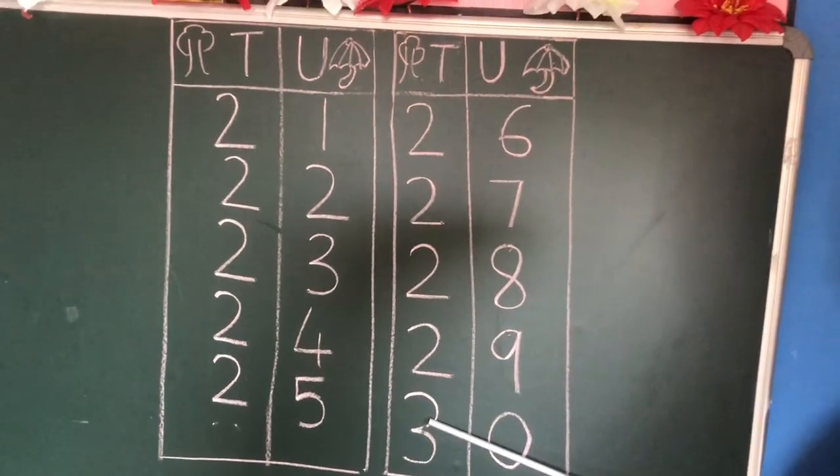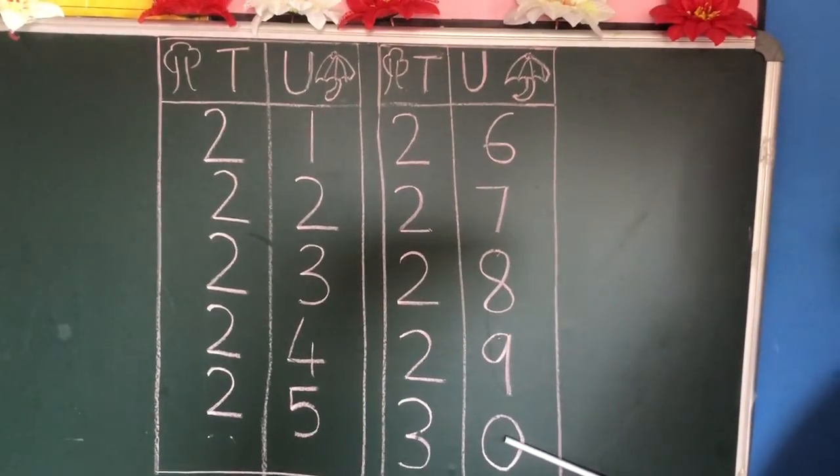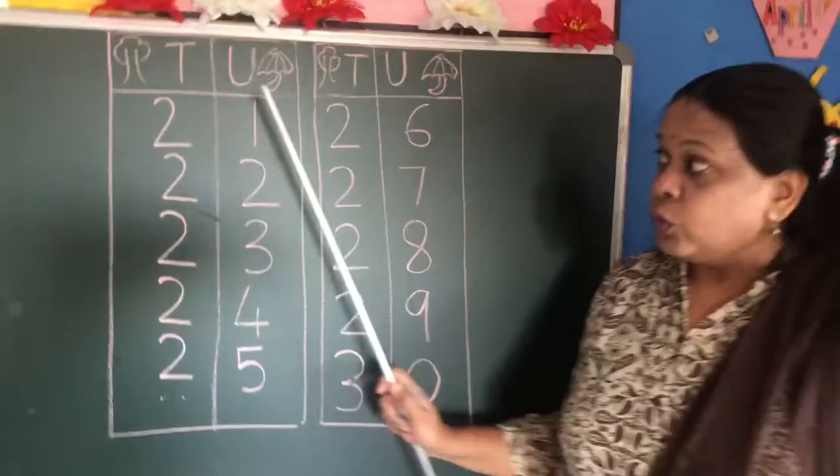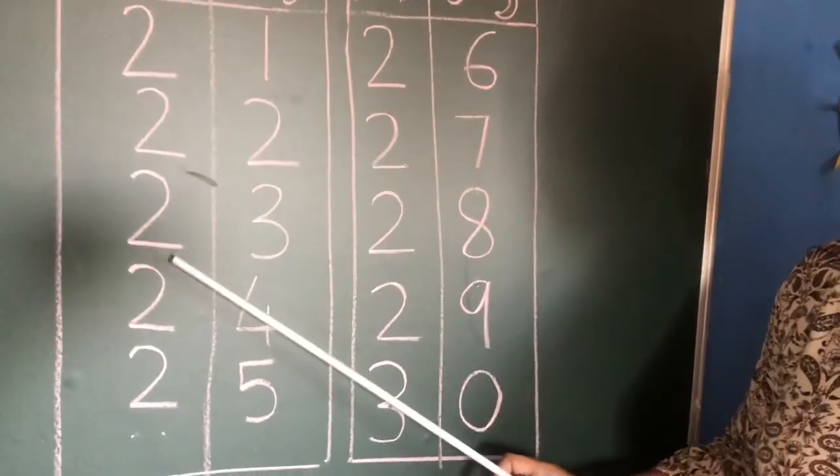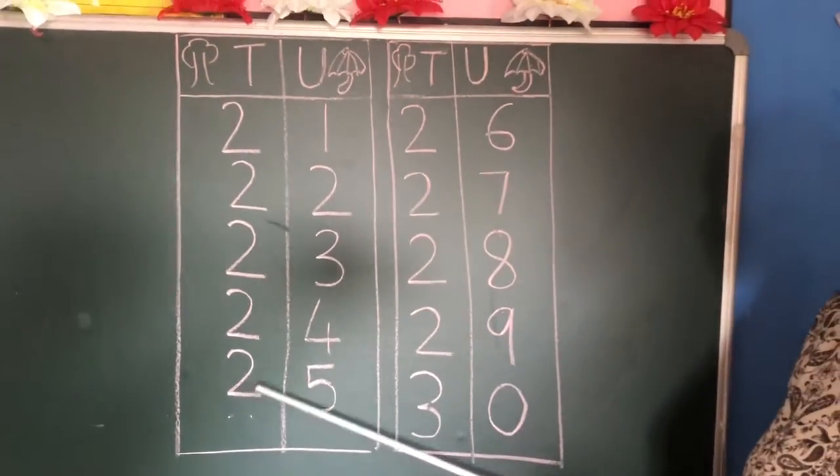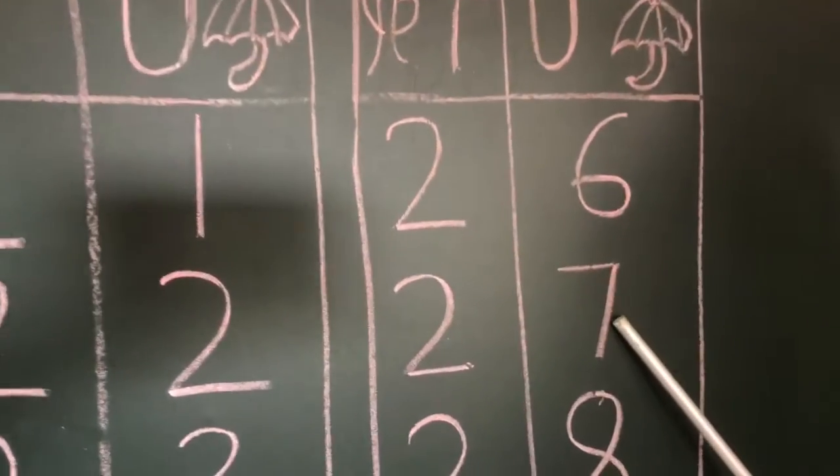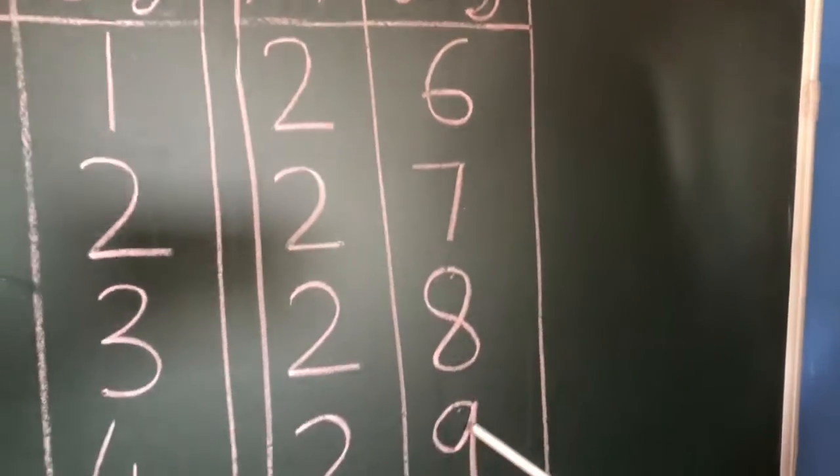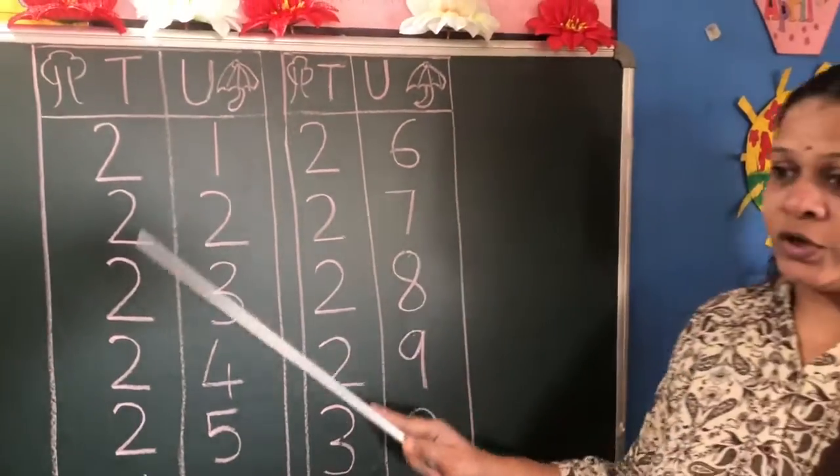Because after 2, which number will come? 3. And after 9, always remember, 0 will come. Now we will revise it. 21, 22, 23, 24, 25, 26, 27, 28, 29, 30.